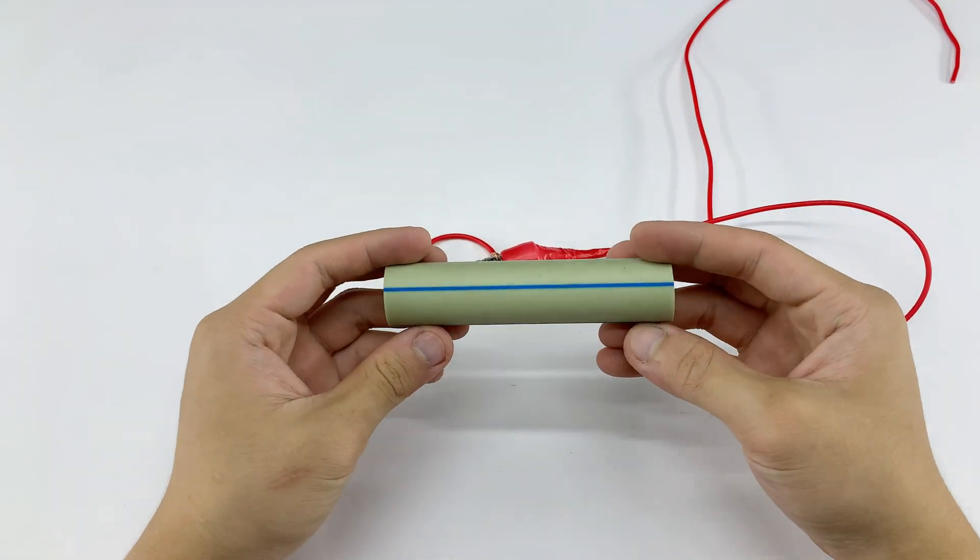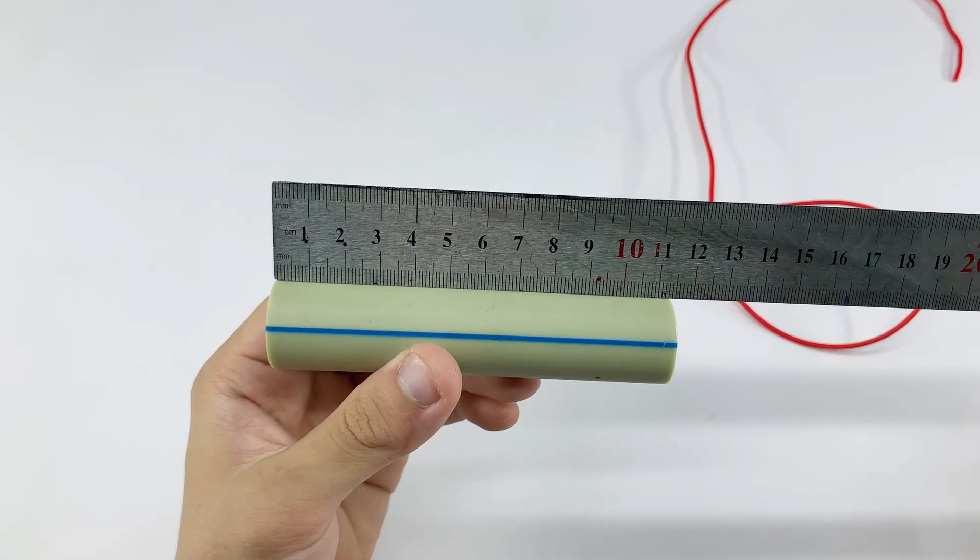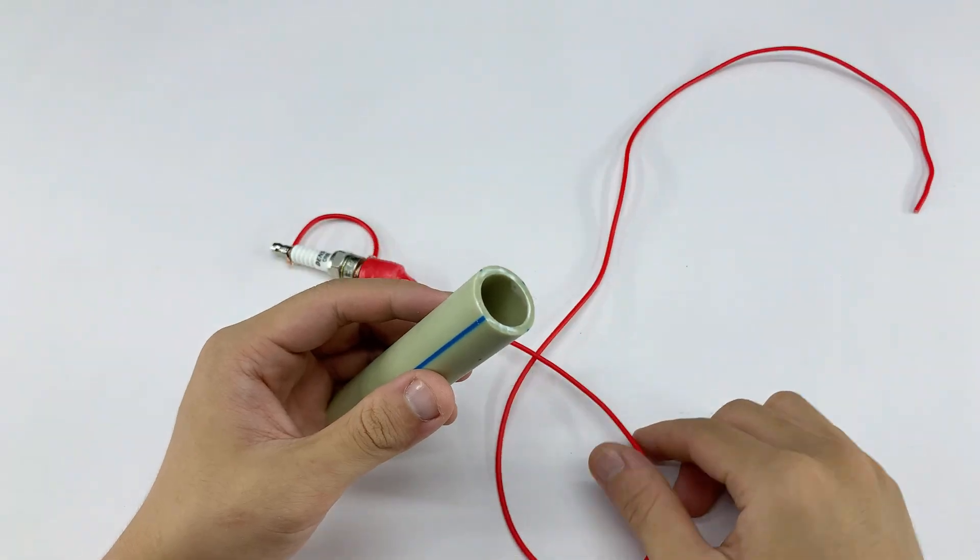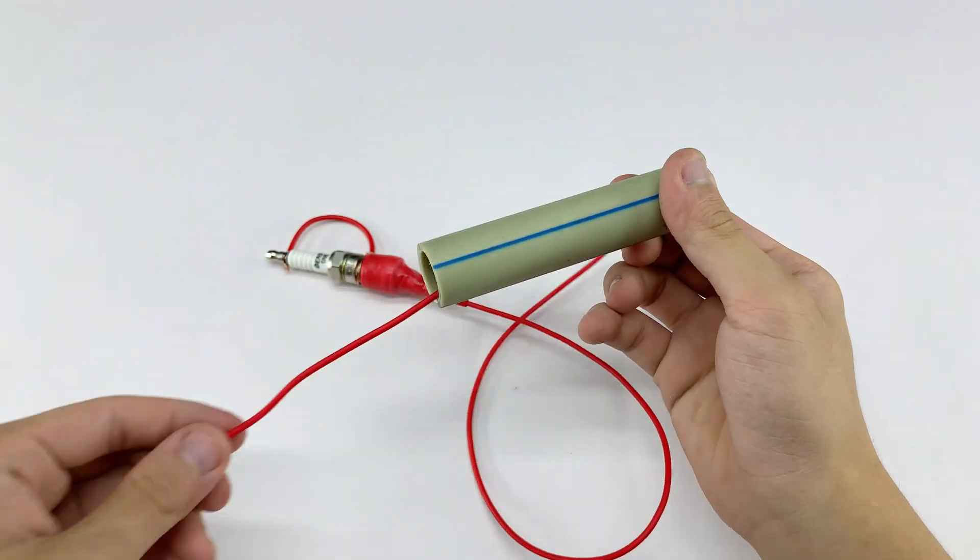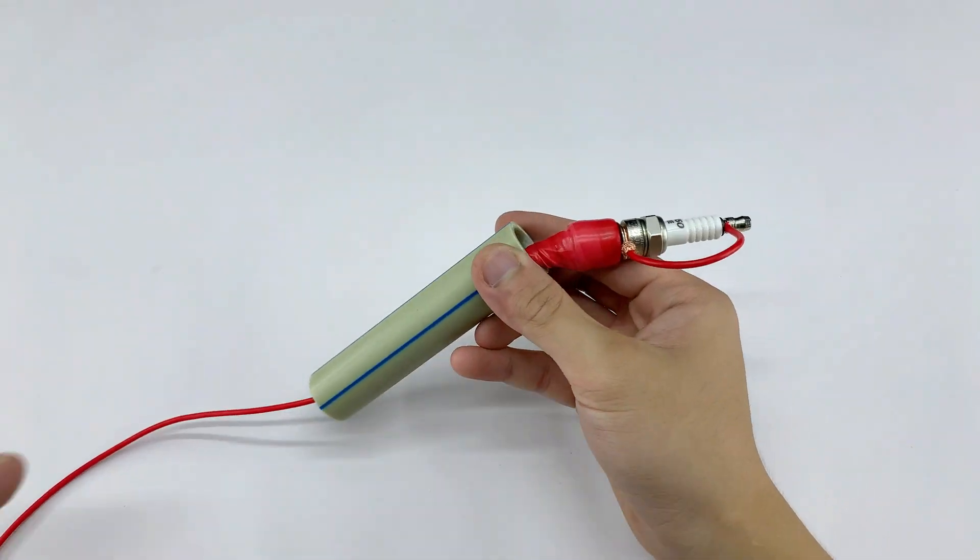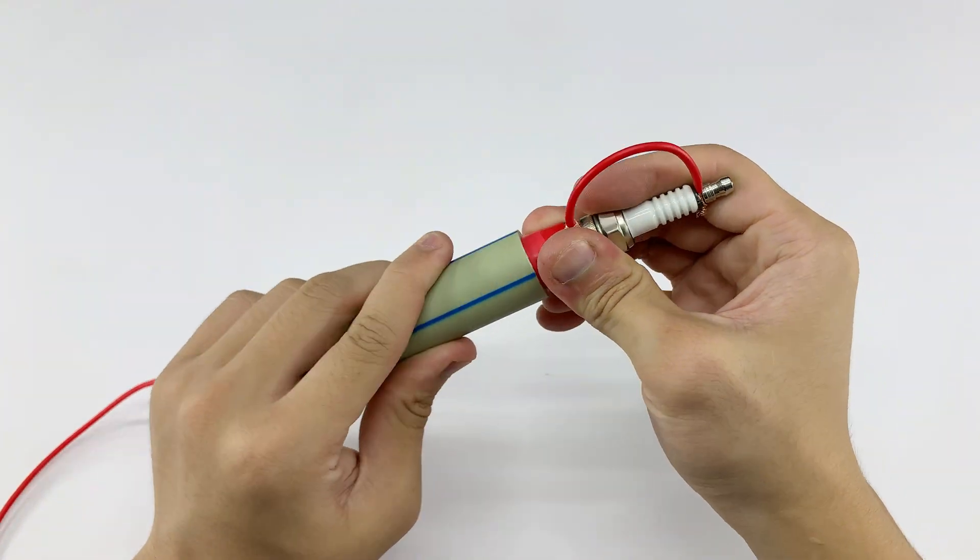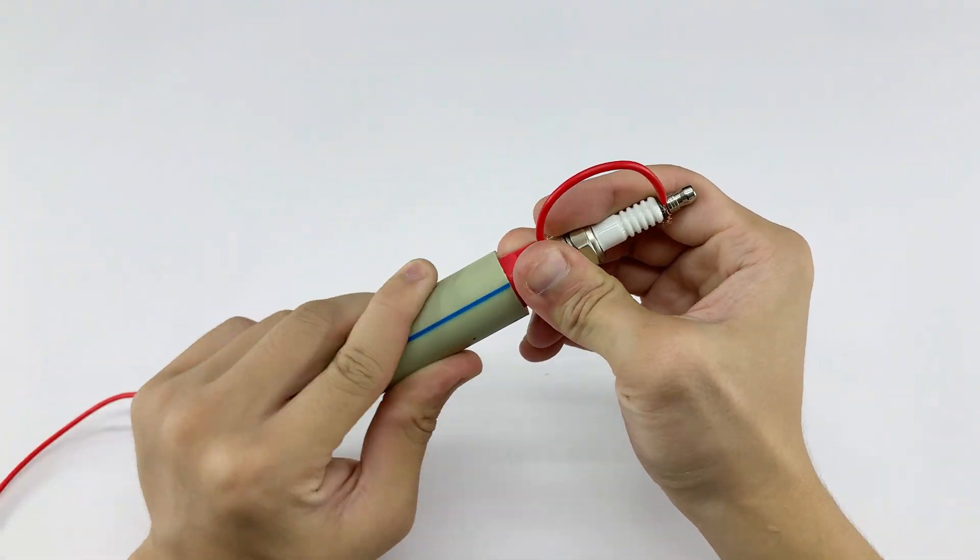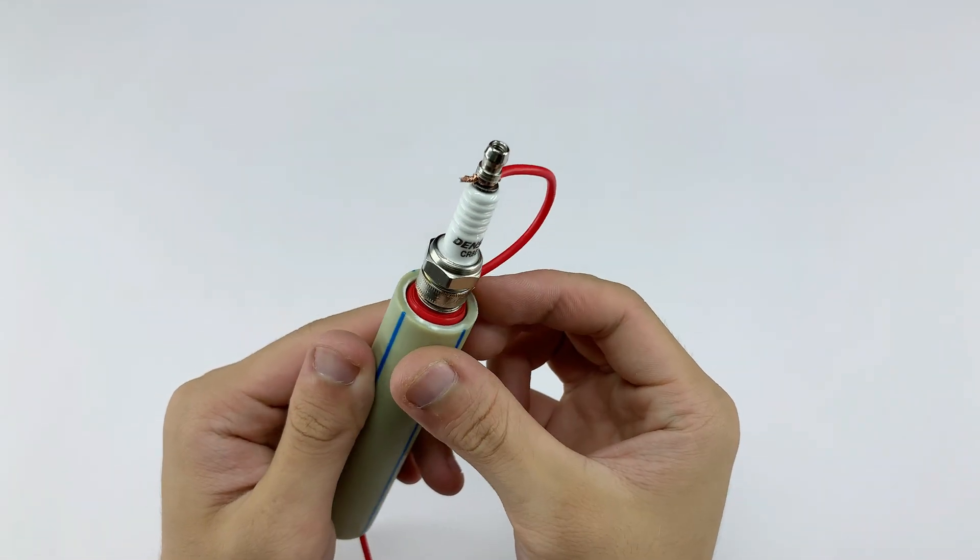We'll use this piece of PVC pipe as a handle. Welding generates a lot of heat, so no one in their right mind would grab the spark plug directly. Just a bit of simple creativity with basic materials, and it keeps things both handy and safe. Oh, I forgot to mention an important detail earlier. When wrapping tape around the spark plug's threaded body, wrap it a bit thicker. That way it will fit securely inside the PVC pipe handle.